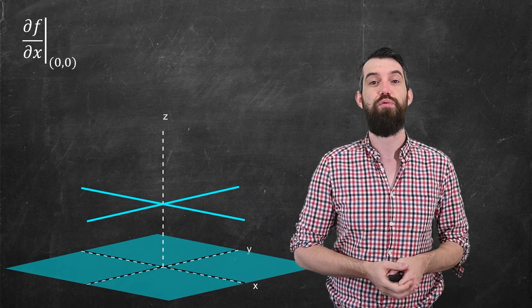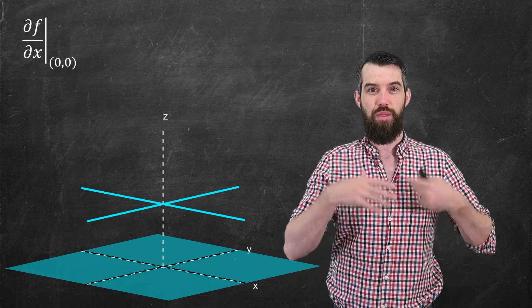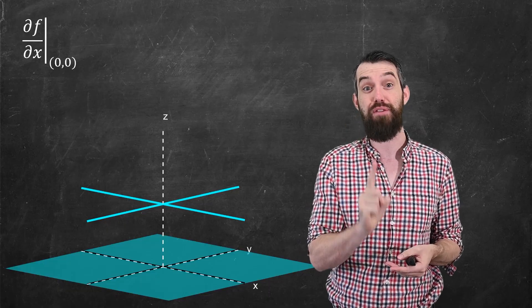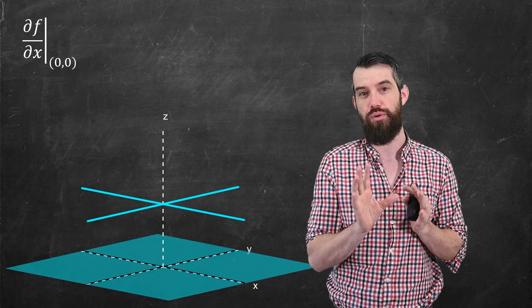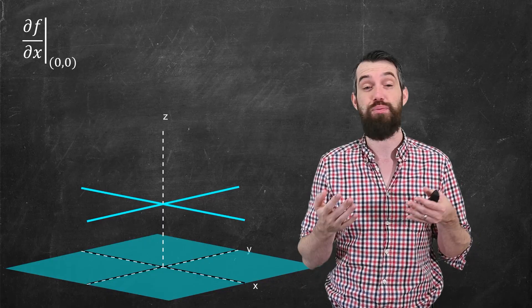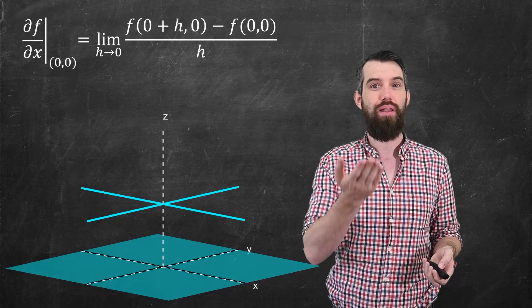So let's do the partial derivative with respect to x first. So the partial derivative of f with respect to x at the point (0,0). So that's what the vertical bar means, evaluated at (0,0). The definition of partial derivatives, as we've seen previously, is, well, it's analogously a limit.